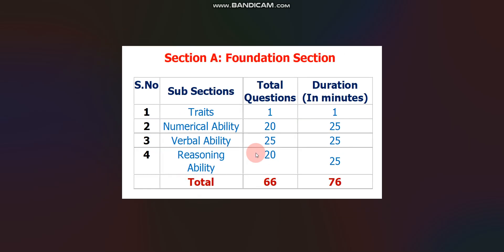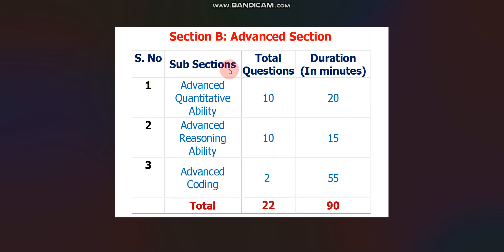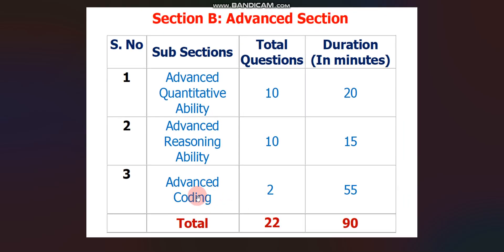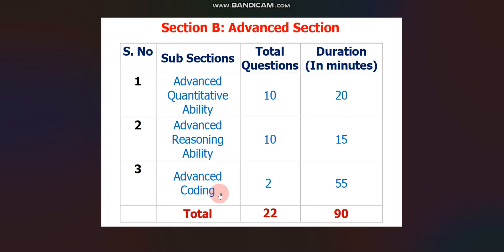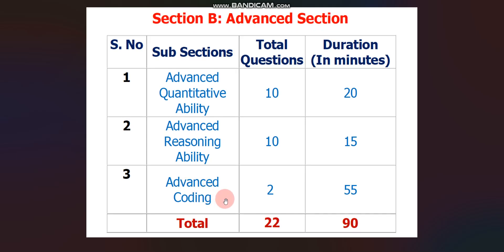Regarding the Advanced Coding subsection: to get an interview mail for TCS Digital, you must perform well in Advanced Coding. For TCS Ninja, you need to score at least some marks — if you pass three or four test cases out of seven or eight, you can easily get the TCS Ninja offer. If you are not good at coding and want to know how to pass at least three or four test cases, I have already uploaded a video on that — click the 'i' button or find the link in the description.